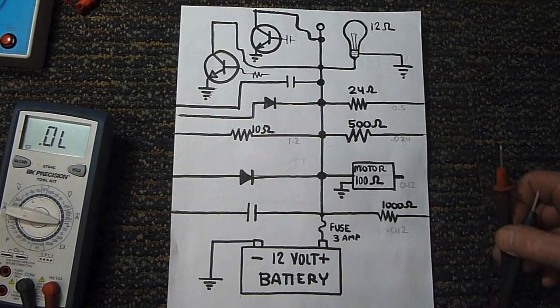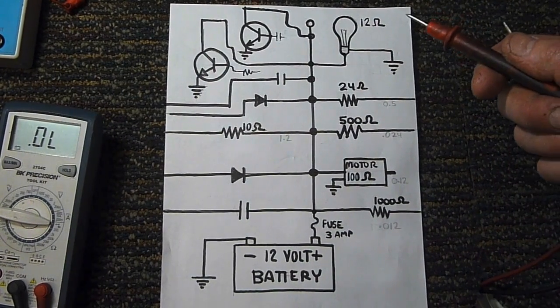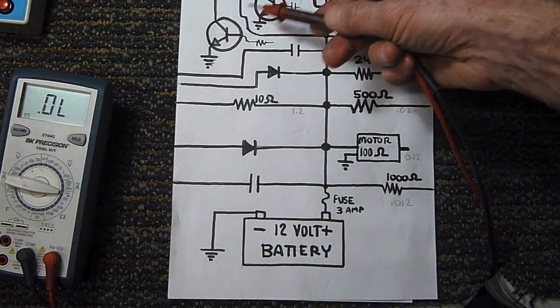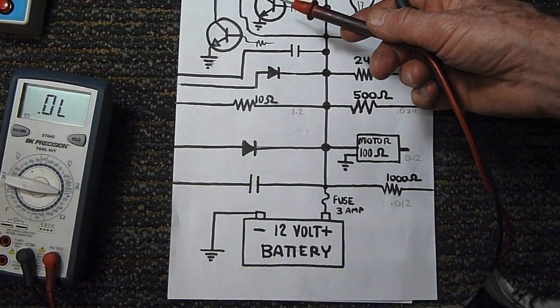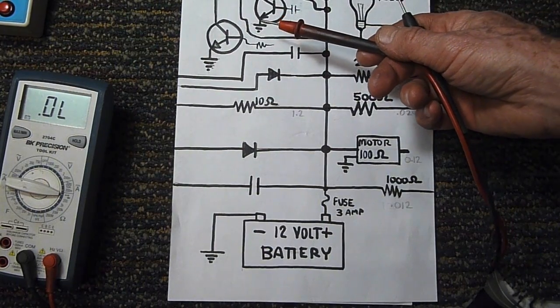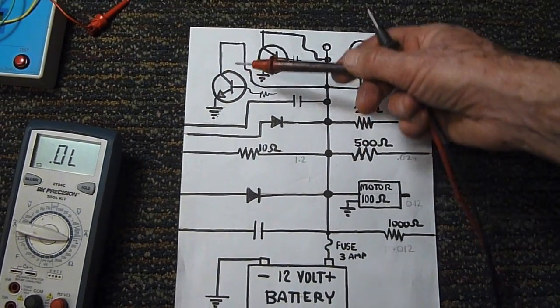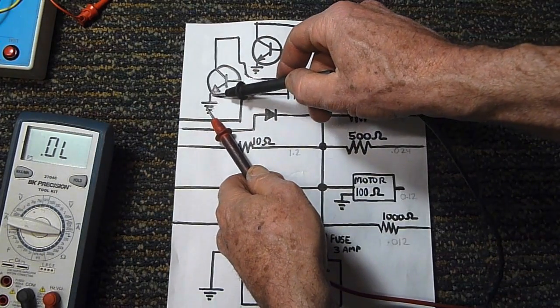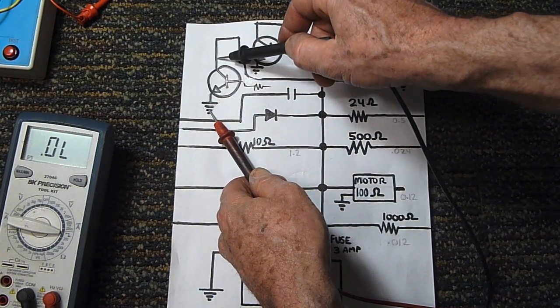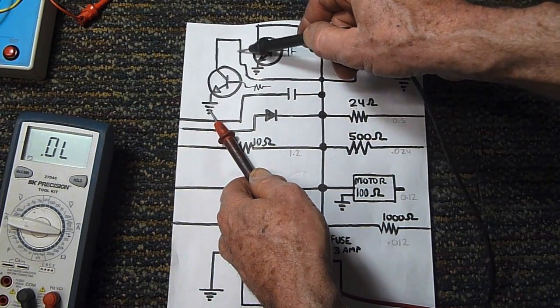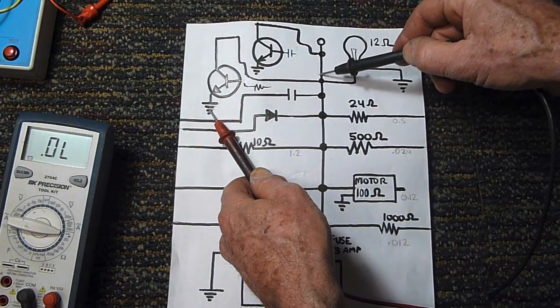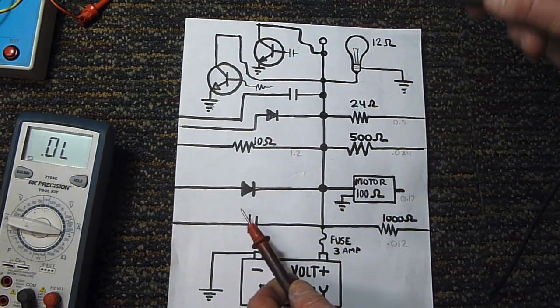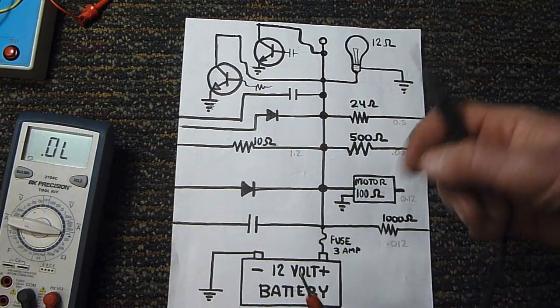Before I pull the plug on this video, I forgot to mention a couple of other areas that are common sources of shorts to ground, and that's transistors, voltage regulators, and integrated circuits. Now you can see on this diagram, for example, what would happen if this transistor were shorted. If it had a direct short between the emitter pin and the collector, you'd have a direct short to ground going through this way. And it would short out your whole positive rail here. And like I said, the same thing can happen with ICs and voltage regulators.